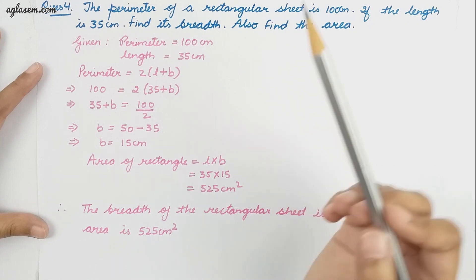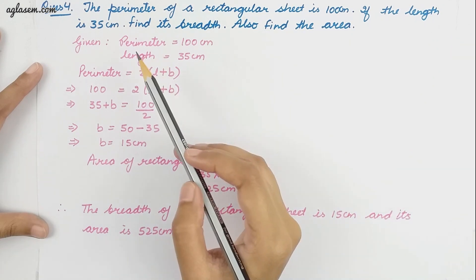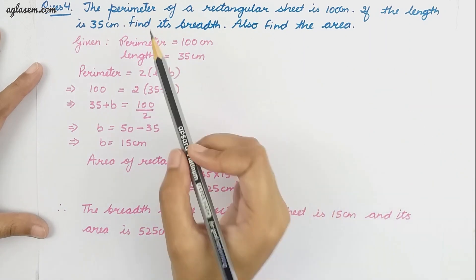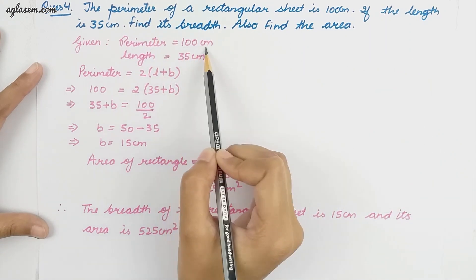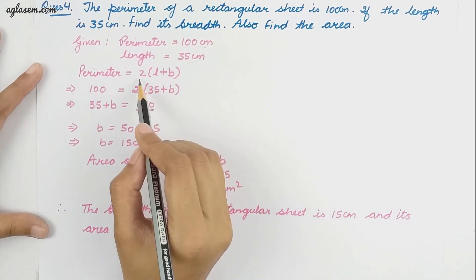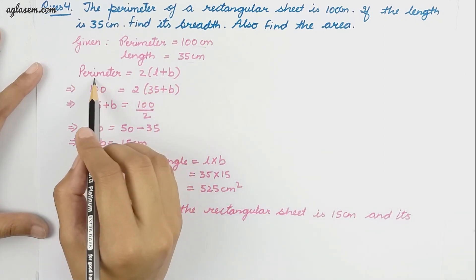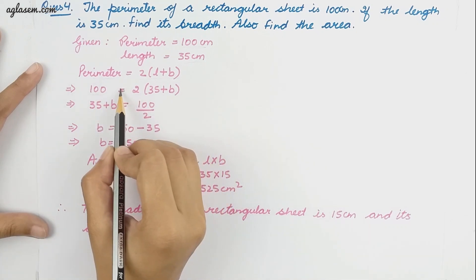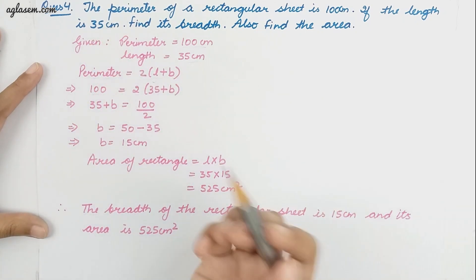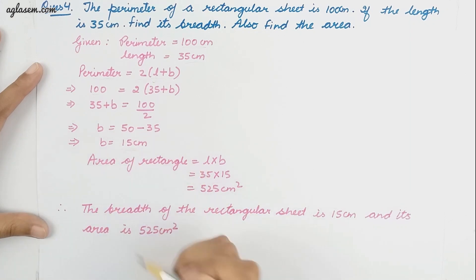Our next question: the perimeter of a rectangular sheet is 100 centimeter. If the length is 35 centimeter, find its breadth and also find its area. Given: perimeter is 100 centimeter and length is 35 centimeter. The formula for perimeter is 2 into L plus B, so 100 equals 2 into 35 plus B, from which we get breadth equals 15 centimeter.